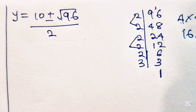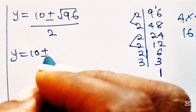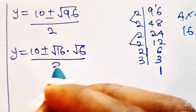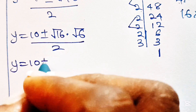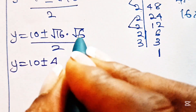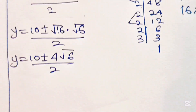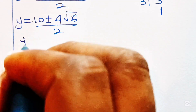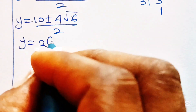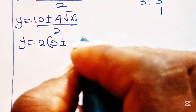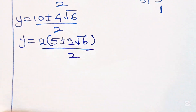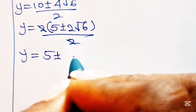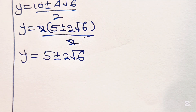Therefore we can rewrite: y equals 10 plus or minus the square root of 16 times the square root of 6, all divided by 2. The square root of 16 is 4, so y equals 10 plus or minus 4 root 6, divided by 2. Factorizing the numerator: 10 divided by 2 is 5, and 4 divided by 2 is 2. So we can cancel the 2, giving us y equals 5 plus or minus 2 root 6.